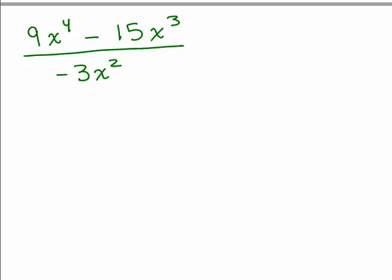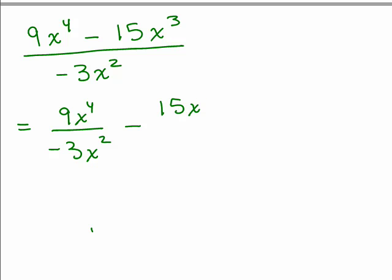In this case there are only two terms in the numerator, but again we're dividing by a monomial — a single term. You've got to be very careful with the negative signs here. So we have 9x to the fourth over negative 3x squared, and here we've got minus 15x cubed over negative 3x squared. Because you have a minus sign and then another minus sign, that could be changed to plus and plus, but we've got a positive divided by a negative, so we are going to have to deal with that.